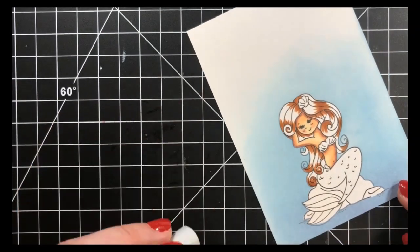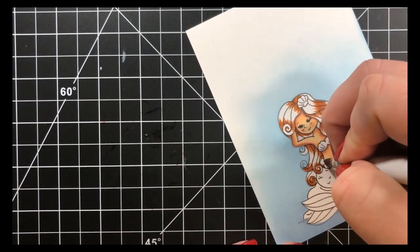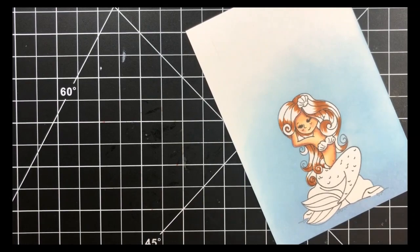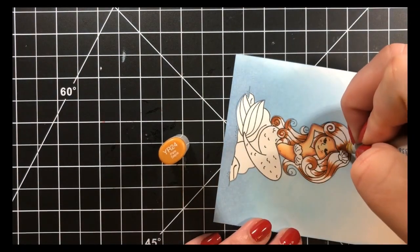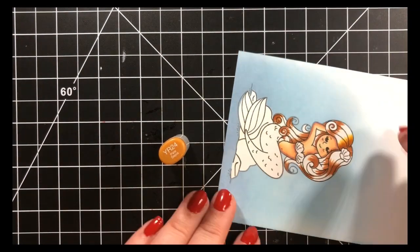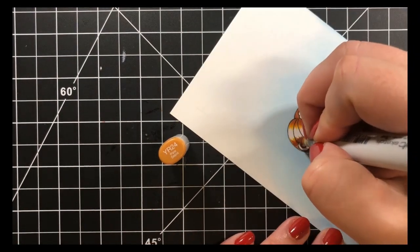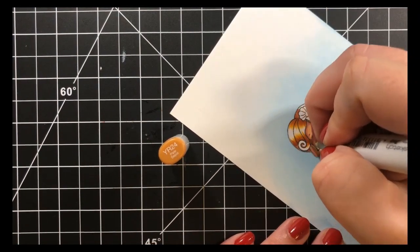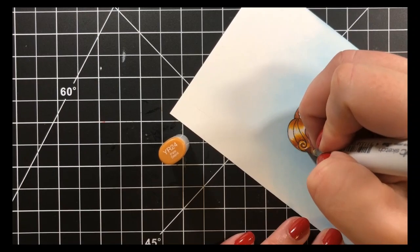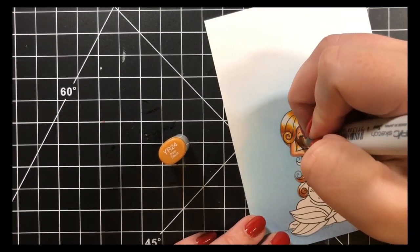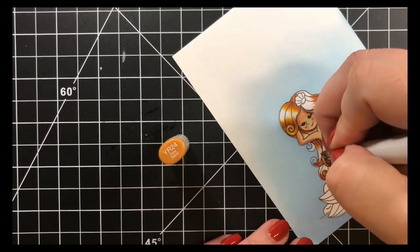Next, I will go in with my YR24 and I'm going to go right over that E15. So, in order to lighten that up, I'm not going to start where my flicks ended. I'm going to go over the entire thing and extend my flicks a little bit further than they were before.